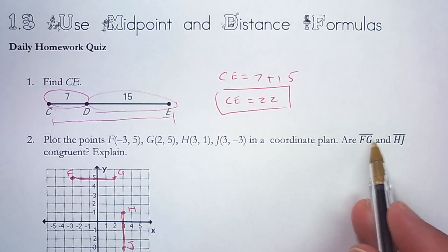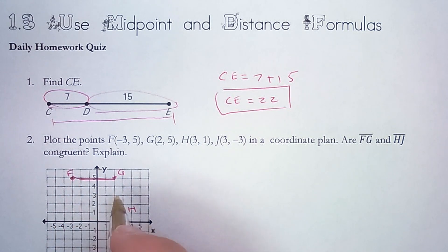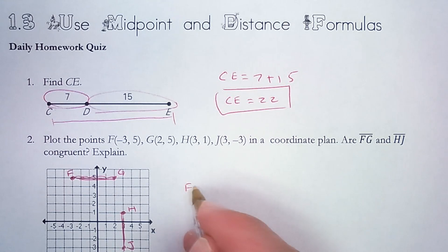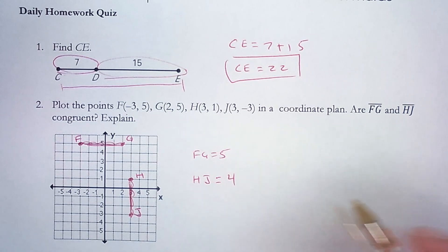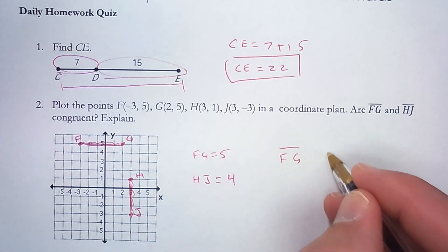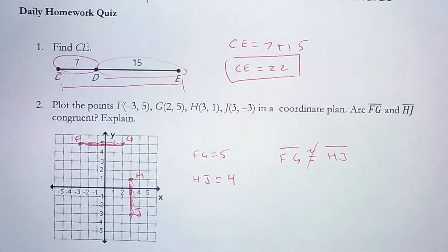Now are segments FG and HJ congruent? FG: one, two, three, four, five. The length of FG is five. HJ: one, two, three, four. The length of HJ is four. They do not have the same length. So I would say that segment FG and segment HJ are not congruent.